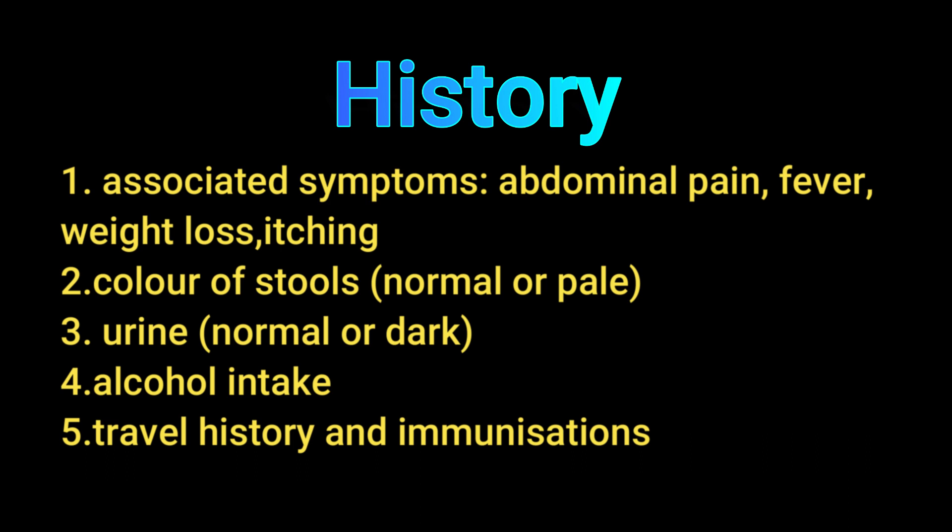What history should you take in a jaundiced patient? First, associated symptoms such as abdominal pain, fever, weight loss, and itching. Then the color of the stools — whether normal or pale — and the color of the urine — whether normal or dark.